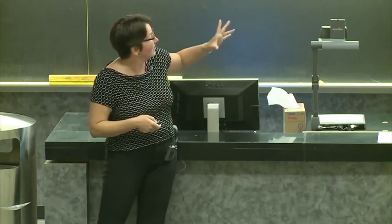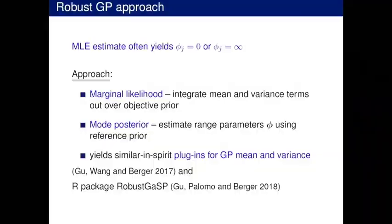There's a strategy to get around this: look at a marginal likelihood — integrate out the mean and variance terms over some objective prior — and then think about a mode posterior instead of an MLE. We estimate the range parameters using a reference prior and look for the mode posterior. We get very similar plug-in results but a much more stable optimization problem. This is work by Ming-Ying Gu and Jim, and there's both a paper and an R package.